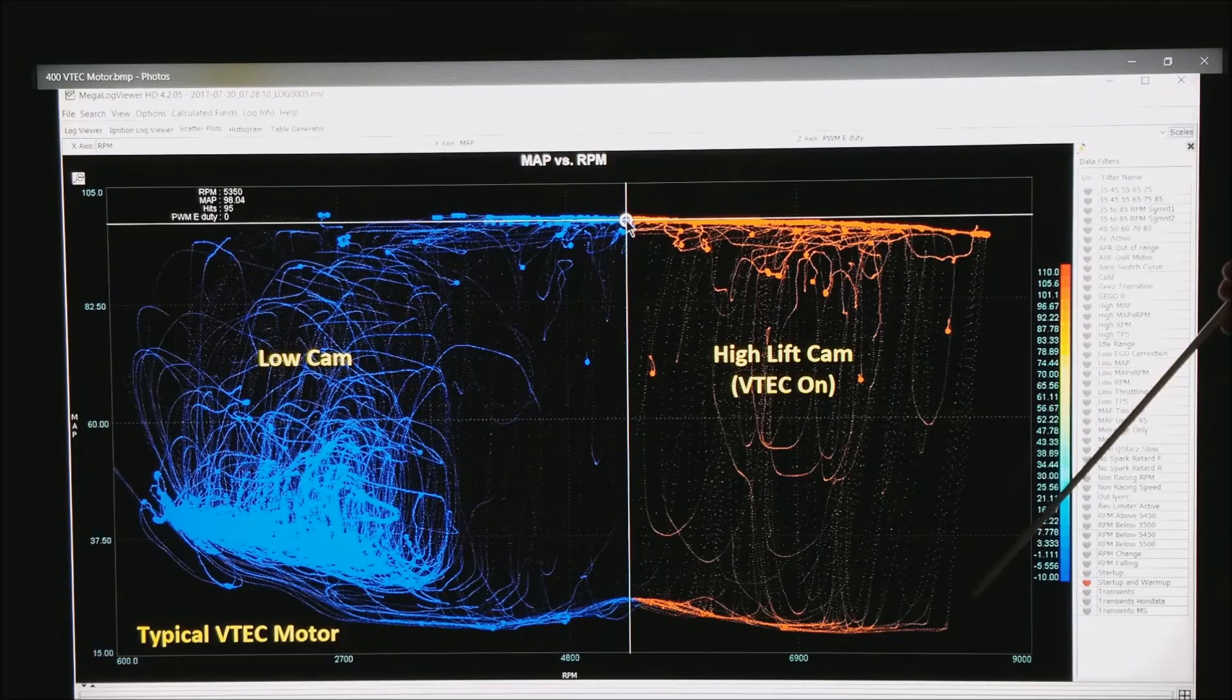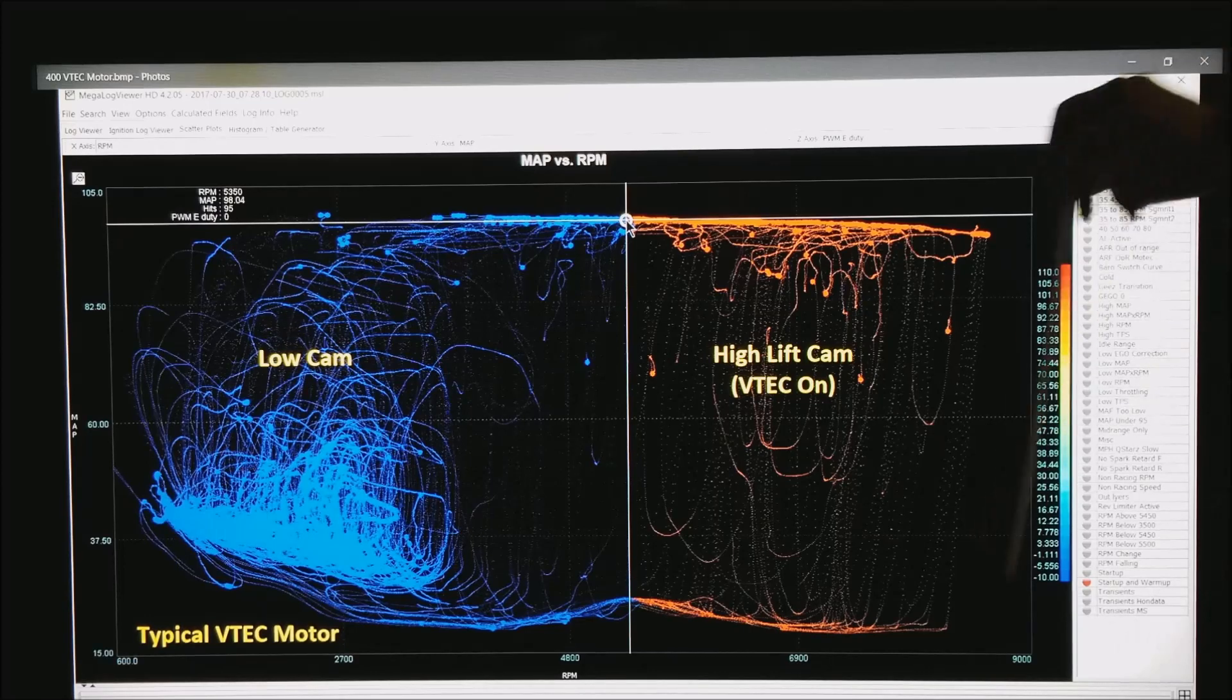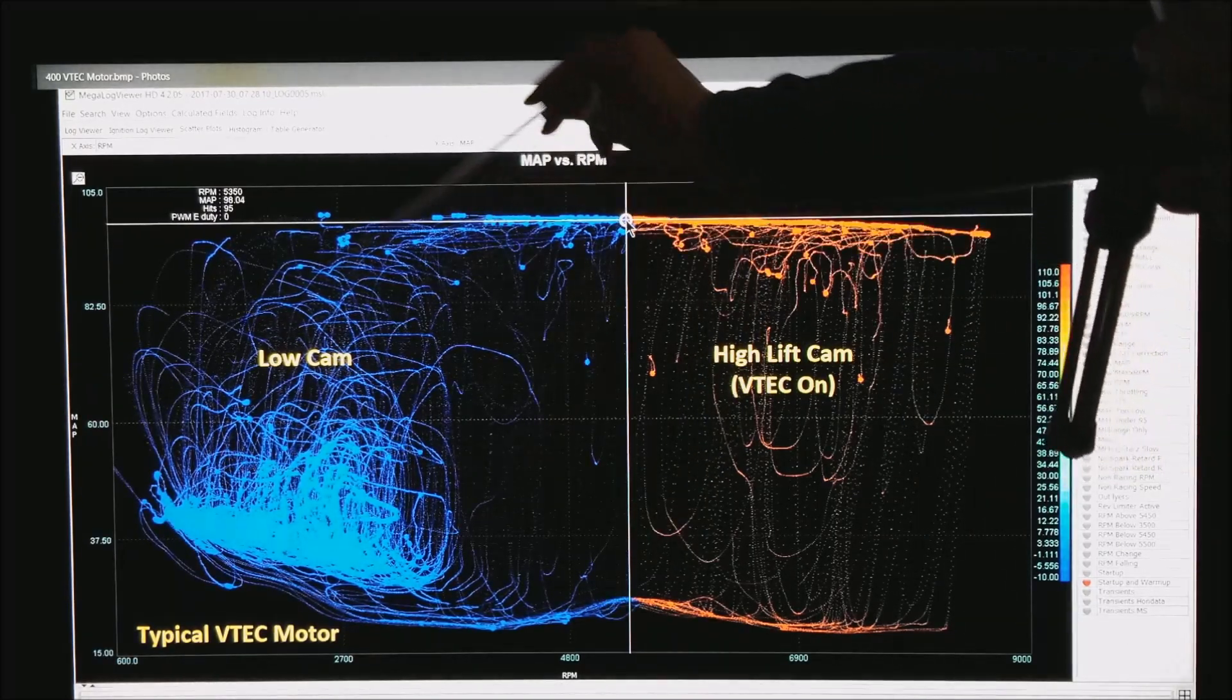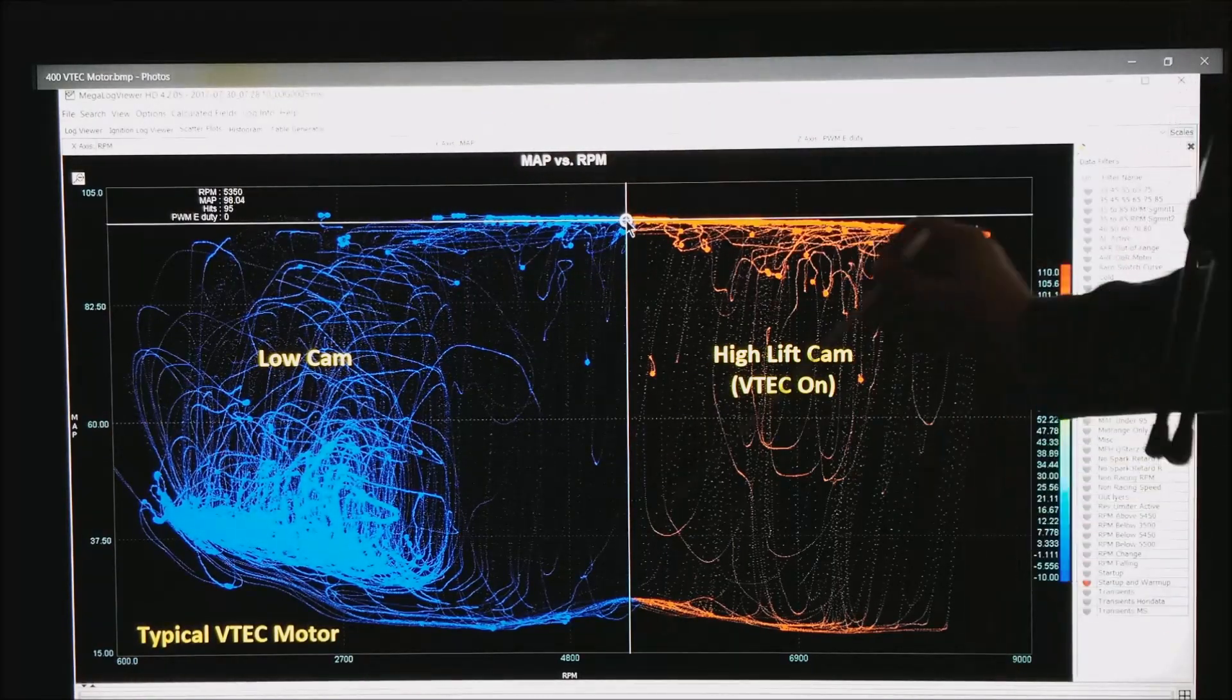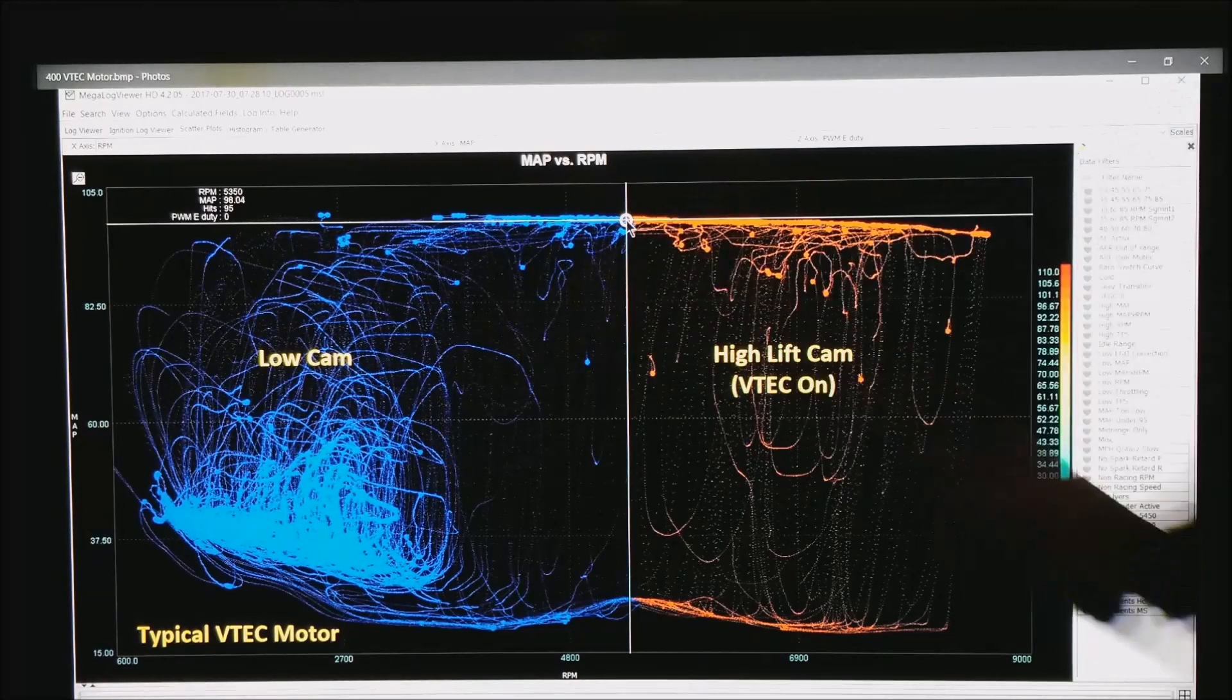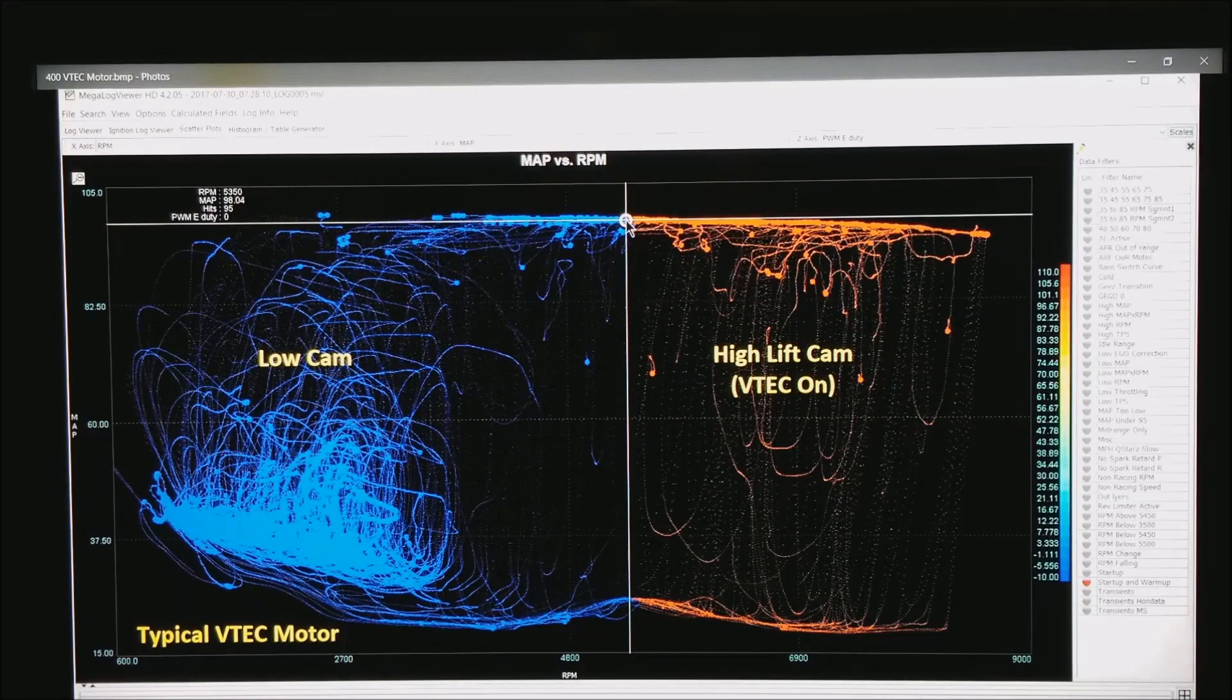A couple of things to notice here. Look at how nice and smooth the lower edge of the map is, but if you've never switched to the low cam you'd probably have a line right down through this area, but since I have a low cam on the left I get lots of good drivability in the lower left part of the map.